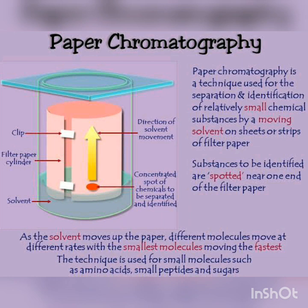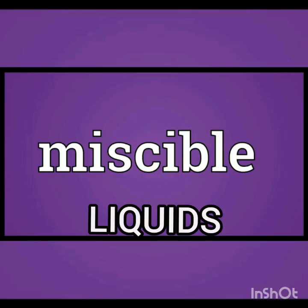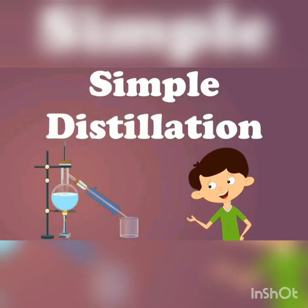Previously we discussed the separation of two immiscible liquids using a separating funnel. Today we are going to start with the separation of miscible liquids. Miscible liquids are those liquids which mix together and form a single layer — they form a homogeneous mixture.